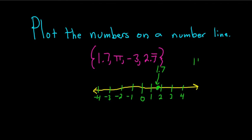Pi is called an irrational number. It's approximately equal to 3.14, that's what this symbol means. So it's just barely bigger than 3. So it's going to be like right here, this purple dot. That will be our pi.